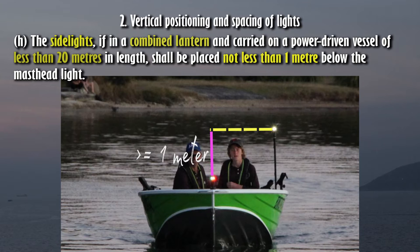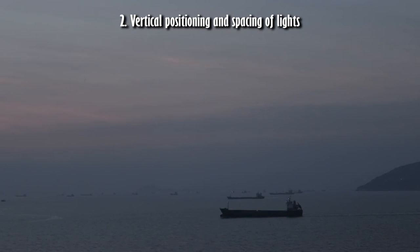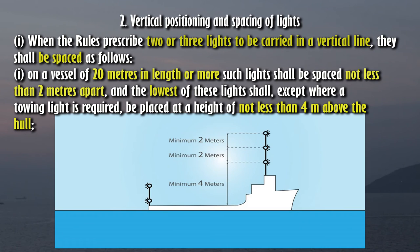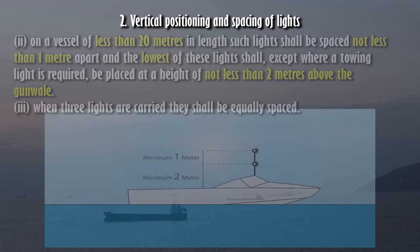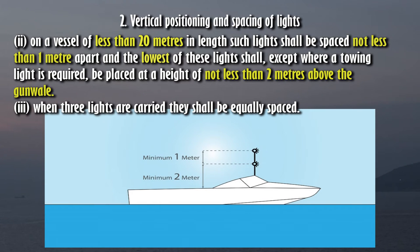(I) When the rules prescribe two or three lights to be carried in a vertical line, they shall be spaced as follows: (1) On a vessel of 20 meters in length or more, such lights shall be spaced not less than 2 meters apart, and the lowest of these lights shall, except where a towing light is required, be placed at a height of not less than 4 meters above the hull. (2) On a vessel of less than 20 meters in length, such lights shall be spaced not less than 1 meter apart, and the lowest of these lights shall, except where a towing light is required, be placed at a height of not less than 2 meters above the gunwale. (3) When three lights are carried, they shall be equally spaced.